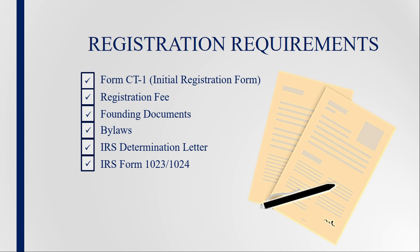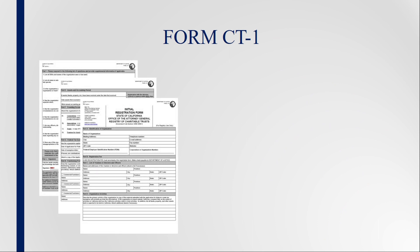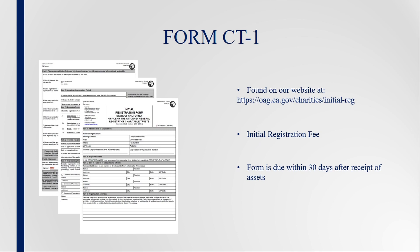The forms and registration instructions are available on the Charities page of the Attorney General's website. The Form CT-1 starts the initial registration process and it must be filed within 30 days after a charity's receipt of assets. Use the latest version of Form CT-1 available on our website at oag.ca.gov/charities/initial-reg.